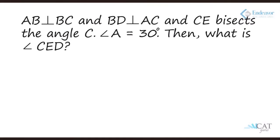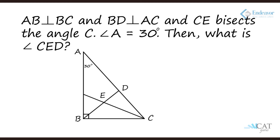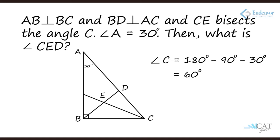Let us take another example. AB is perpendicular to BC, BD is perpendicular to AC, and CE bisects angle C. Given that angle A is 30 degrees, what is angle CED? In triangle ABC, since AB is perpendicular to BC the right angle is at B, so angle C equals 180 minus 90 minus 30, which is 60 degrees. CE is the angle bisector, so both parts of angle C become 30 degrees each, making angle DCE equal to 30 degrees. Since BD is perpendicular to AC, angle D is 90 degrees. In triangle DCE the angles sum to 180, so angle CED equals 180 minus 90 minus 30, which is 60 degrees.